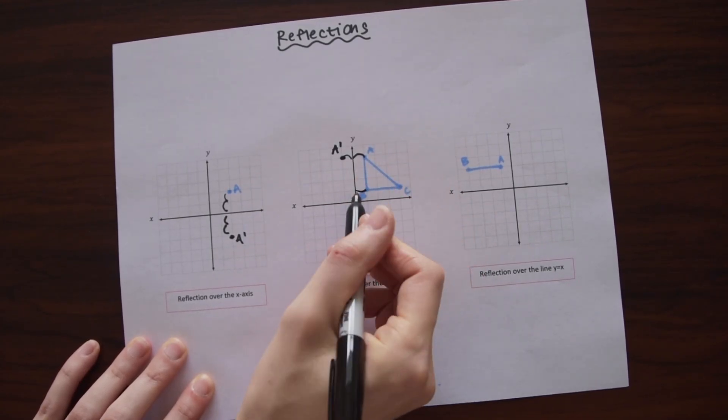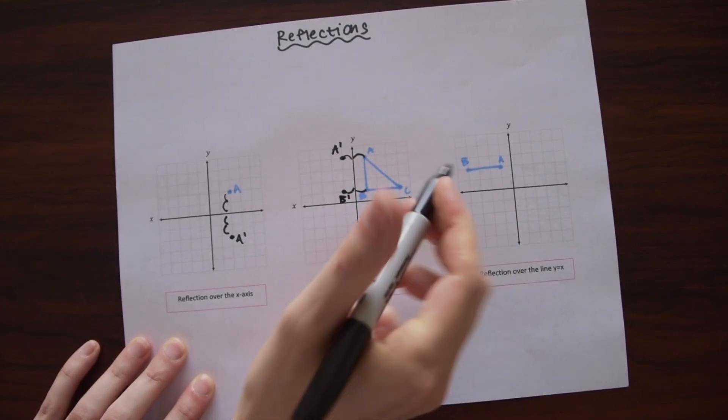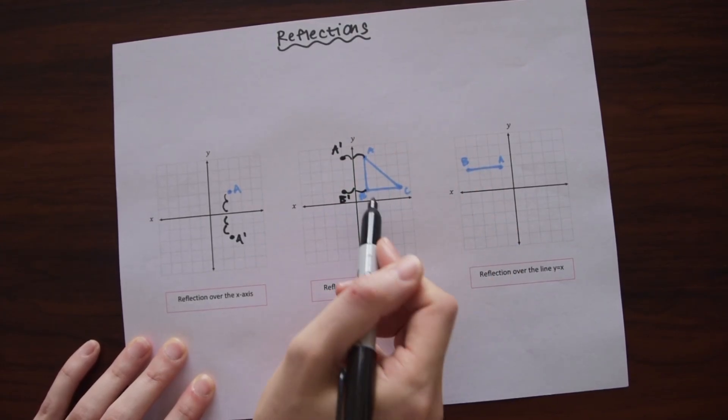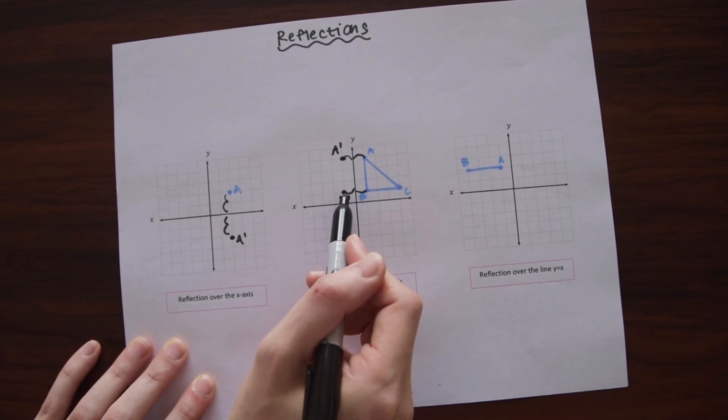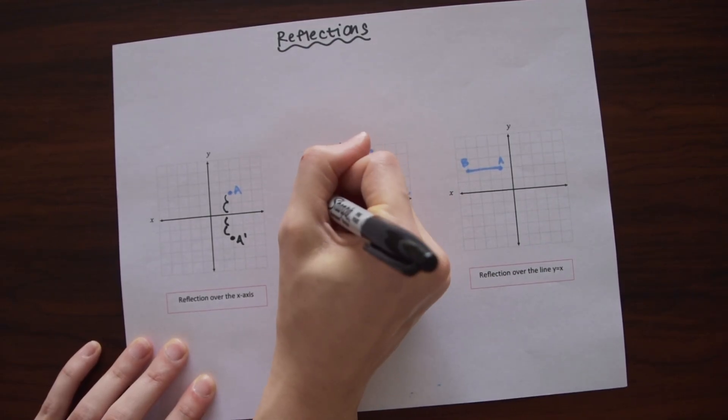Notice point B, very similar, also one unit away. So we're just going to label this B prime. And then C is four units away, one, two, three, four. So we're just going to count four units to the left. One, two, three, four. And then label this C prime.